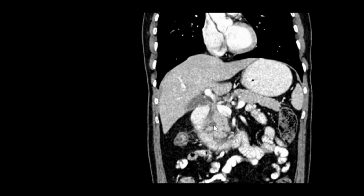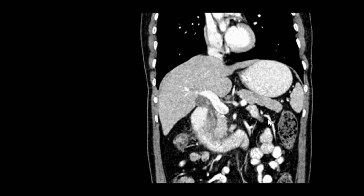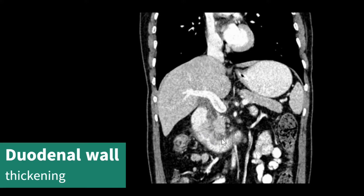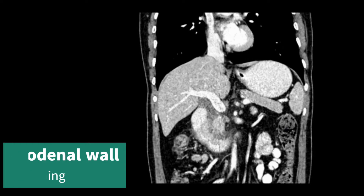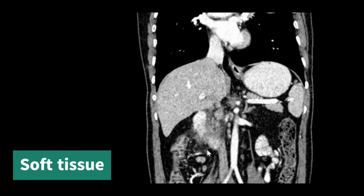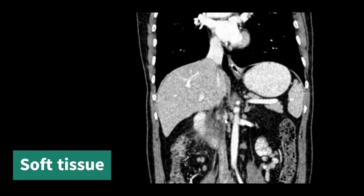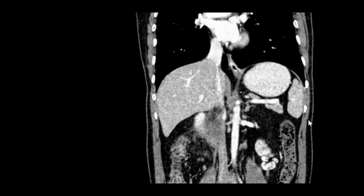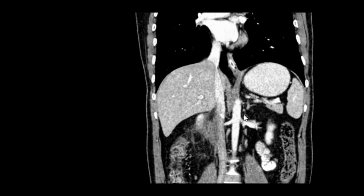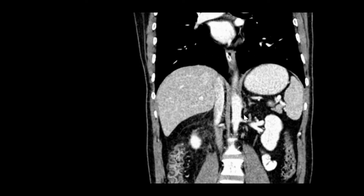We can see the wall thickening — as we move back we can see the medial wall thickening involving the duodenum. Between the head of the pancreas and the duodenum we can see that curvilinear sheet-like soft tissue density. As we move back we can also see the fat stranding, the paraduodenal fat stranding, and there are some lymph nodes in the paraduodenal location surrounding the pancreas.